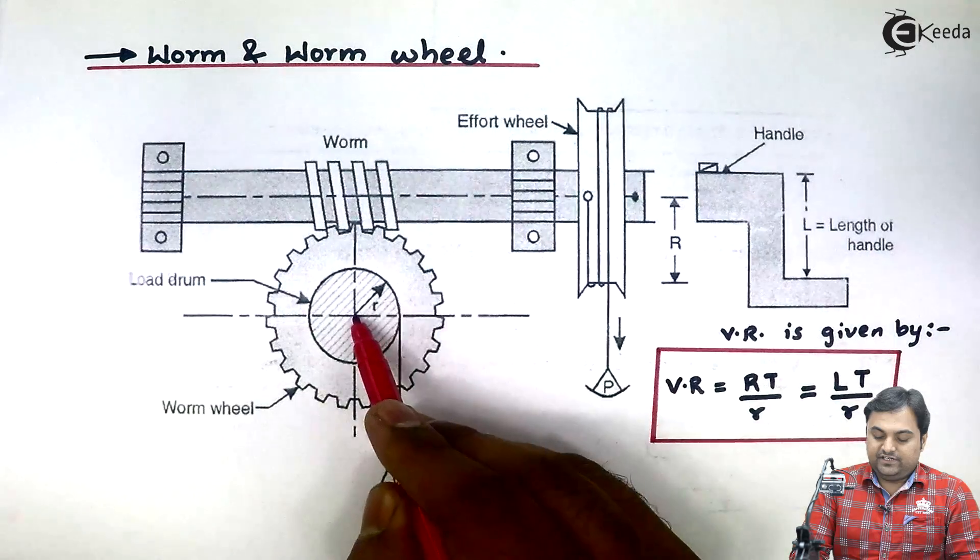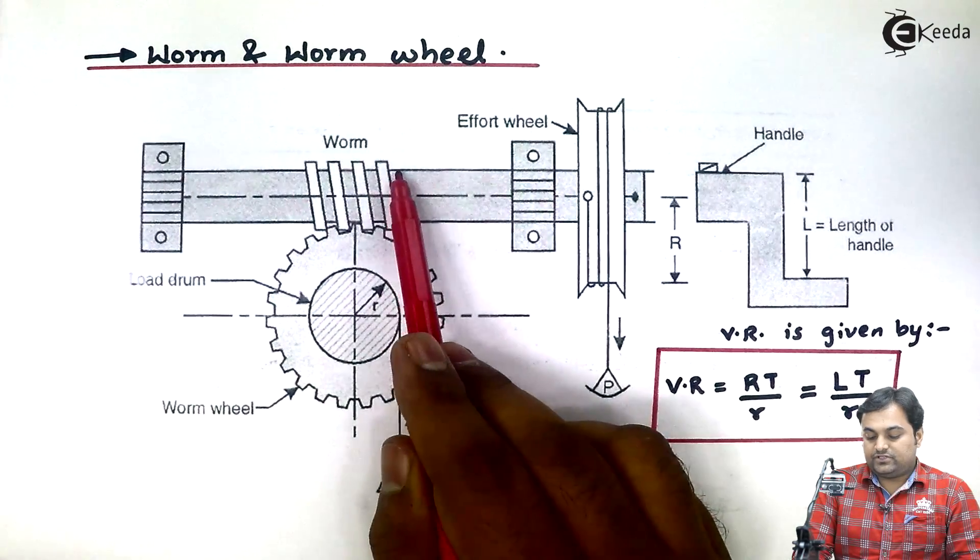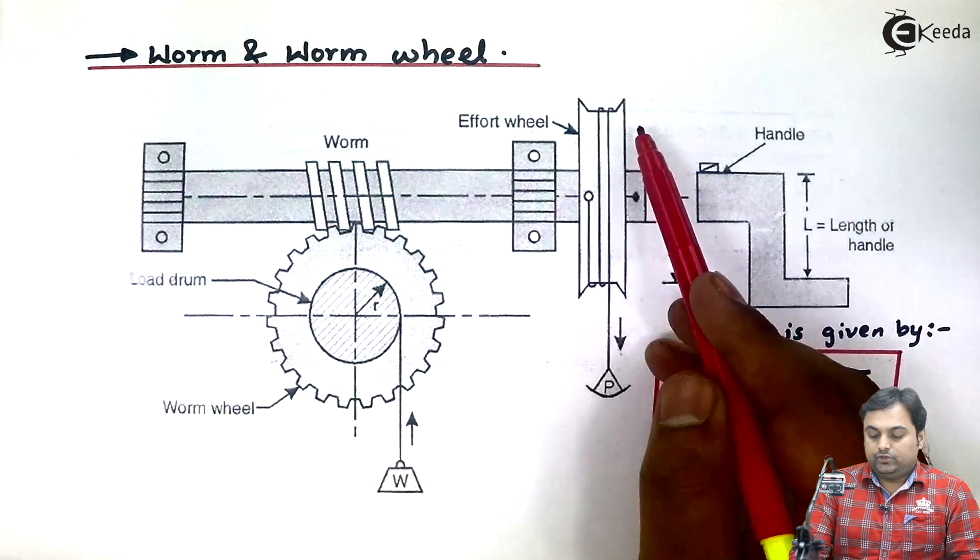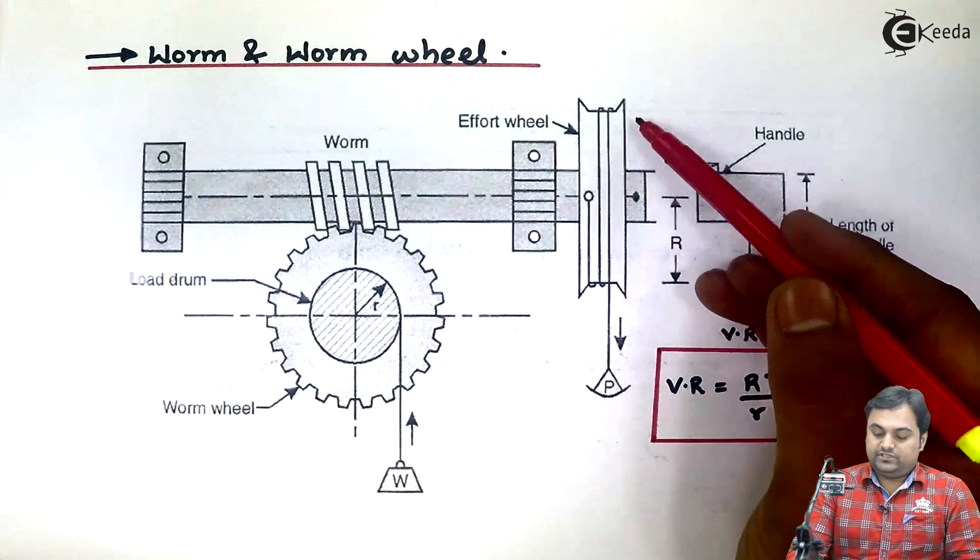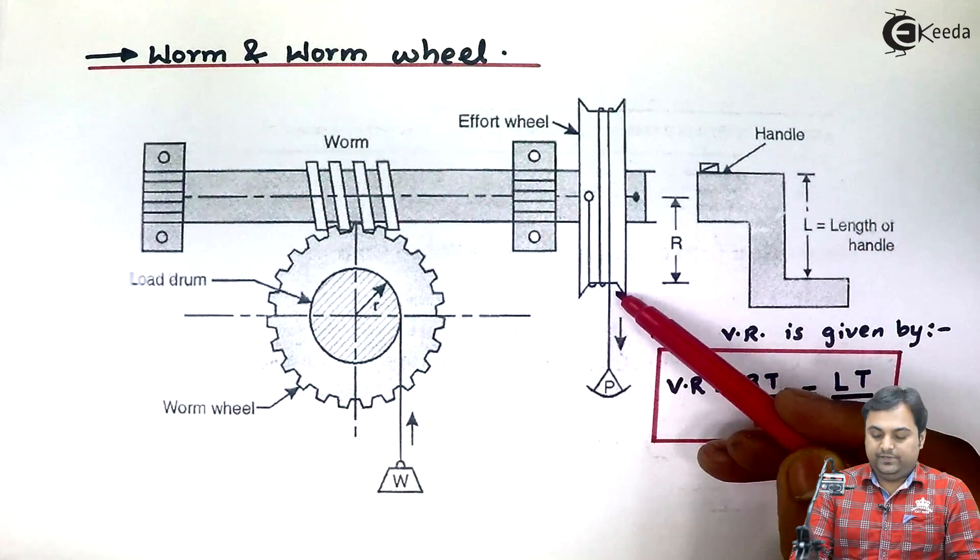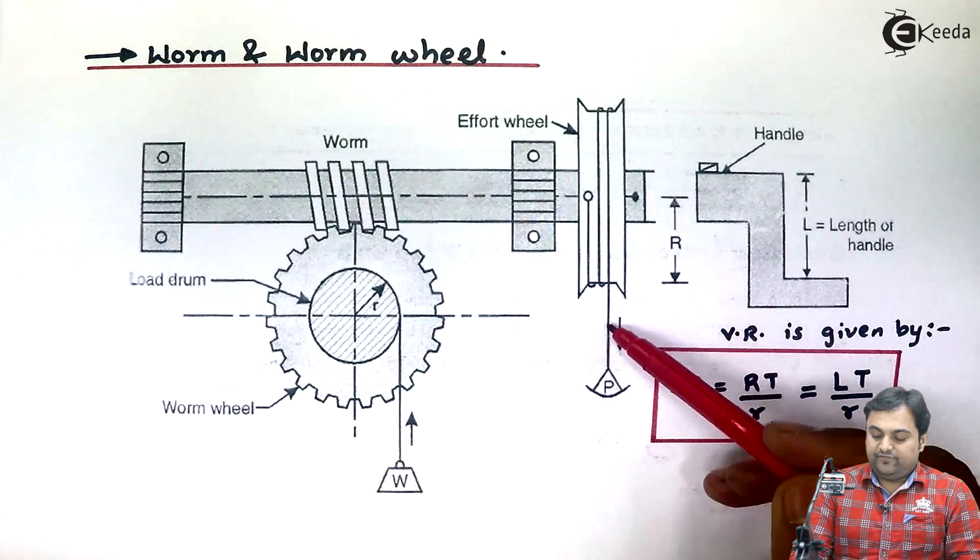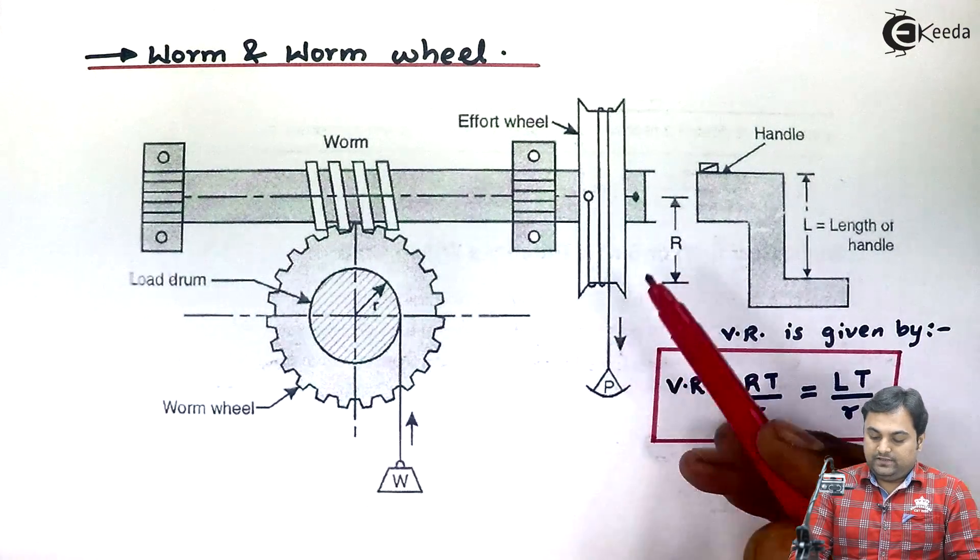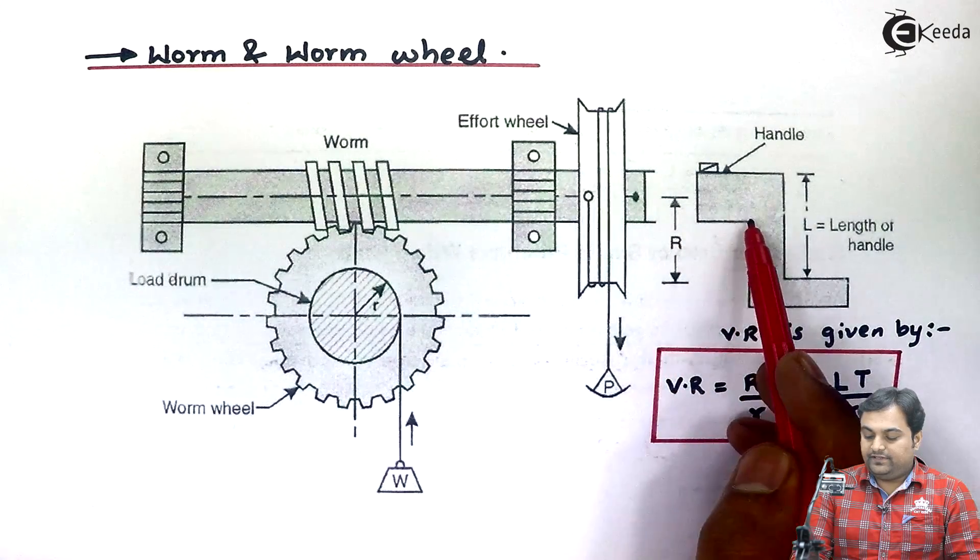Small r is the radius of the load drum. Next, this worm is connected to the effort wheel which has a bigger diameter and at effort wheel we would be applying the effort.